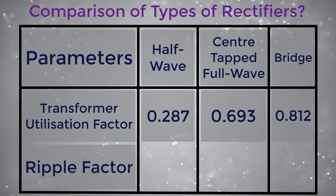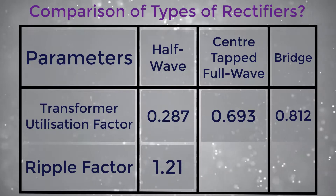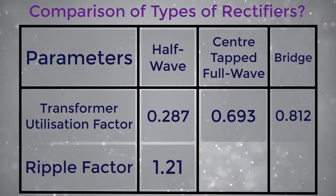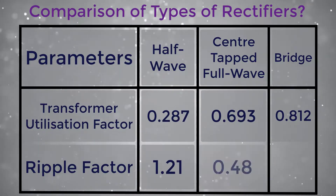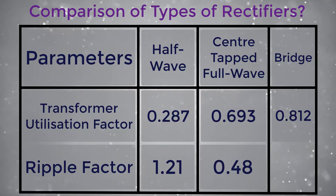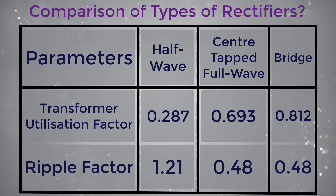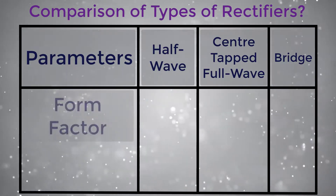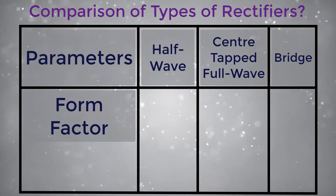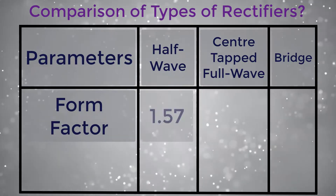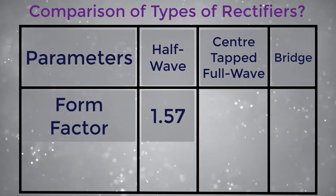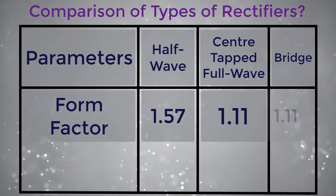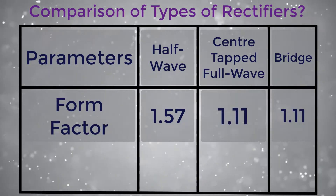Ripple factor: for half wave it is 1.21, and for center tapped full wave and bridge it is also 0.48.